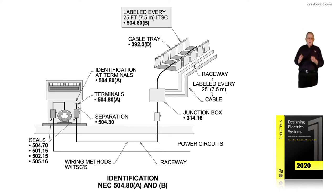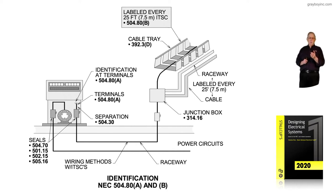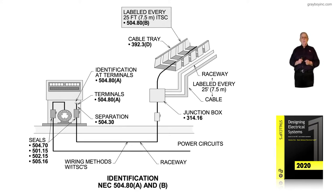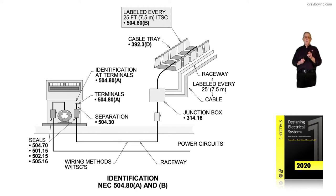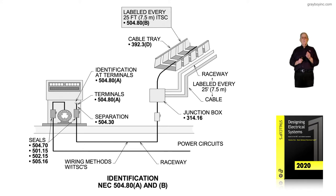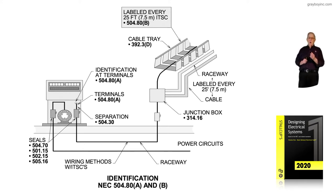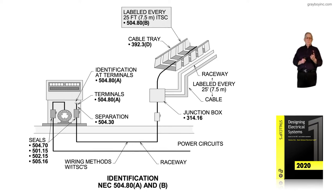Or a label could be put on them. Or you could route them inside the cable tray and put that label on the cable tray per 504.80 B, as you see there. The installation of the cable tray with these type of circuits is 392.10 C. And then you see we have the terminals going into the equipment, 504.80 A.